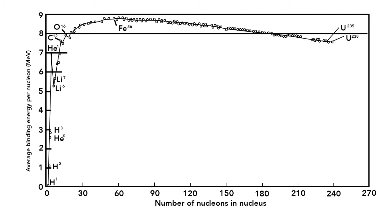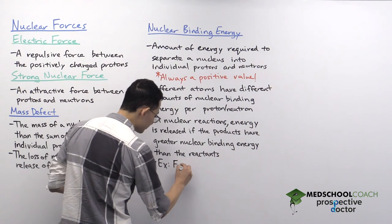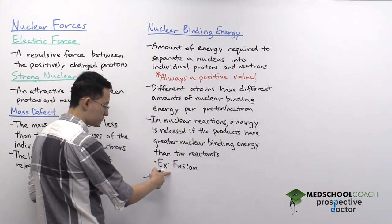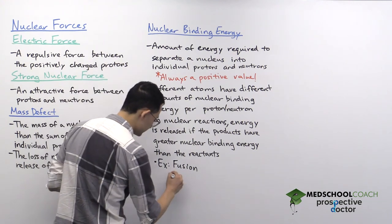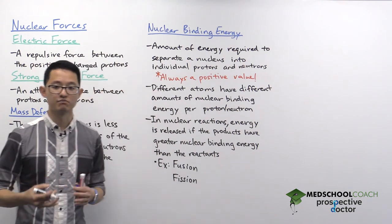We can see this by looking at the nuclear binding energy curve, which shows the amount of nuclear binding energy per nucleon for all atoms of the periodic table. Elemental iron has the most nuclear binding energy per nucleon. So if you go up or down in mass from iron, nuclei are held together less tightly. This explains why we can release energy in both nuclear fusion — fusing smaller atoms into larger ones — and nuclear fission — splitting larger atoms into smaller ones.